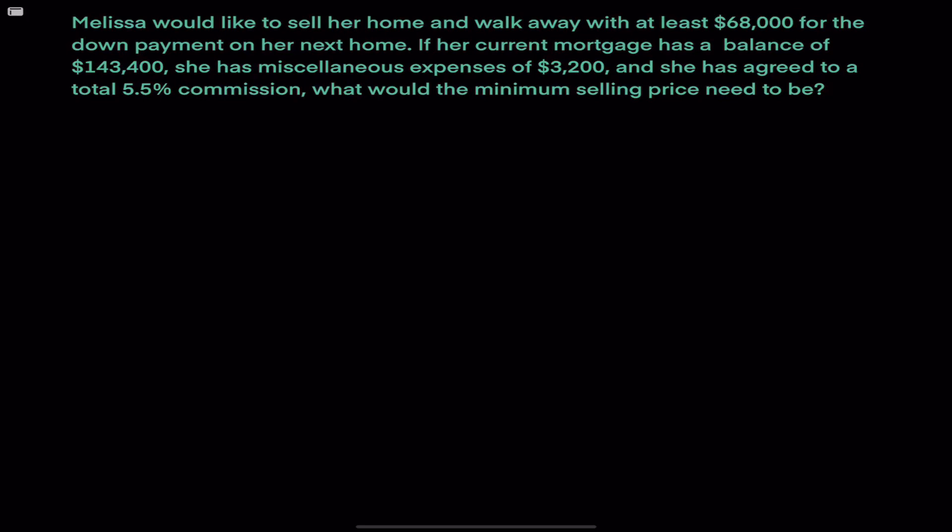Melissa would like to sell her home and walk away with at least $68,000 for the down payment on her next home. If her current mortgage has a balance of $143,400, she has miscellaneous expenses of $3,200, and she's agreed to a total 5.5% commission, what would the minimum selling price need to be?